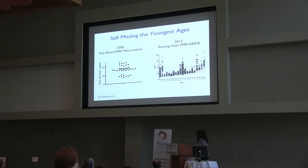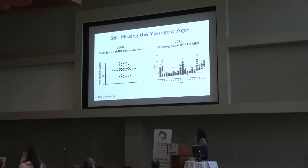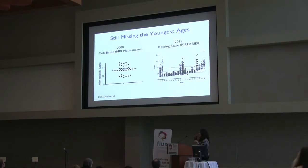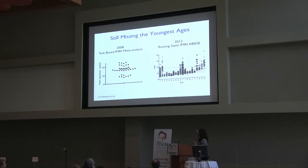One important issue is age, especially relevant given the focus on development. The good news is that resting state fMRI investigators have increasingly focused on younger ages. In a 2008 task-based meta-analysis in autism, 80% of samples were adults. In contrast, the ABIDE resting state dataset includes younger participants, though the youngest age is seven — and considering autism is a very early onset disorder, even seven is late.